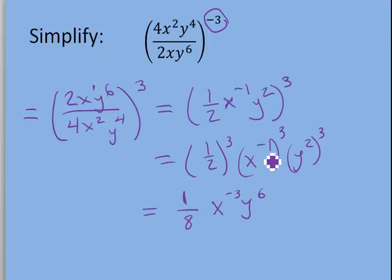Notice we only do this when we have a variable with a power to a power. If we're just raising a number to a power, we just do it like normal. Like when we had 2 here, we did 2 to the 3rd power, and that gave us an 8 in the denominator because 2 times 2 times 2 gives me 8.